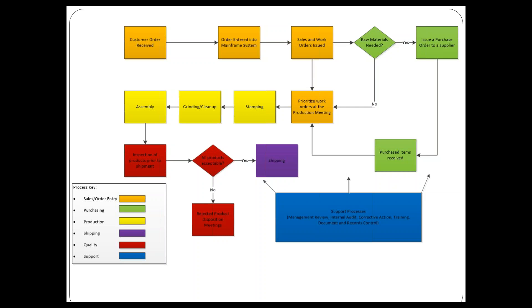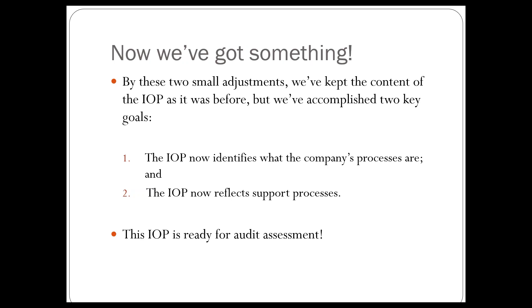In the lower left-hand corner, we can see that there are six processes for this organization: sales order entry highlighted in orange, purchasing in green, production in yellow, shipping — which happens to be a standalone item on the original IOP — quality in red, and support in blue. By these two small adjustments, we've kept the content of the IOP as originally rendered but accomplished two key things: we now know what the processes are and we have a representation of support activity. This is an IOP that is now ready for audit assessment.